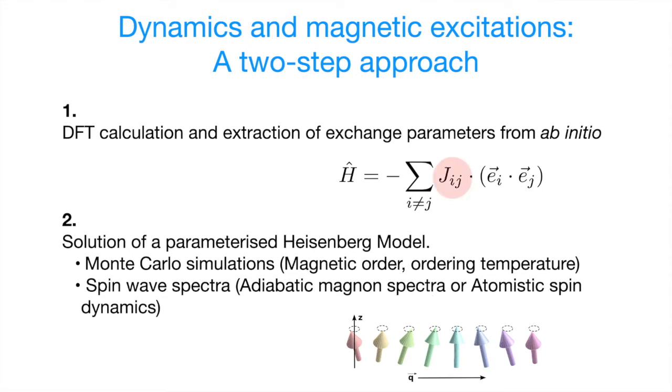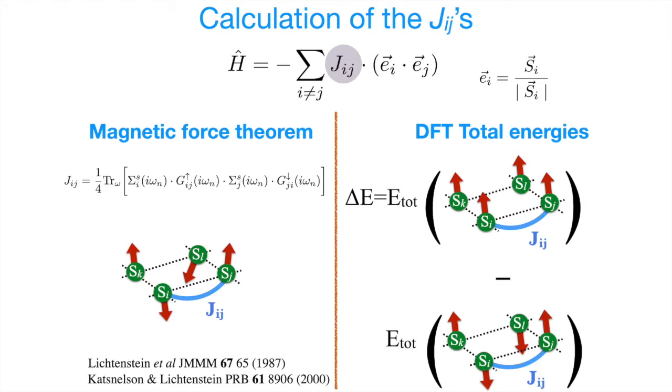So the key question is how to obtain these JIJs from first principles. And in general, there are two commonly used methods. We can use the DFT total energies and calculate the total energies of different magnetic orders, for example, ferromagnetic and antiferromagnetic. And by calculating the differences between these energies, we can map those onto the Heisenberg model and deduce the coupling constant strength.